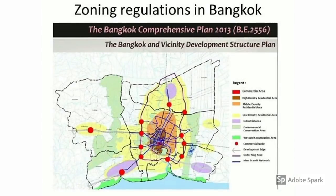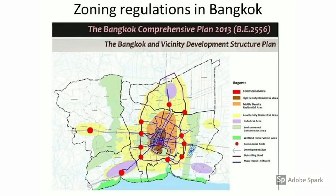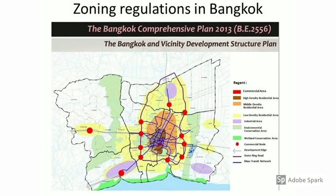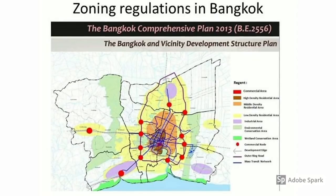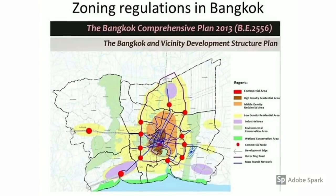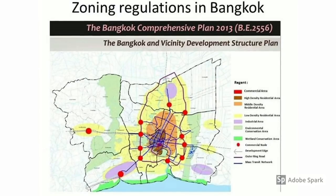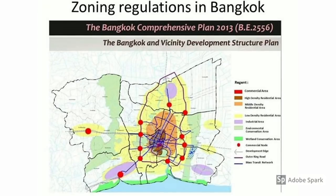Using a system similar to a choropleth map, you can see which areas of Bangkok have been designated for specific uses. The areas along the Chao Phraya River have been designated strictly for recreational use, separate from commercial and residential areas. This map is found in your textbook under 'Zoning Regulations in Bangkok' — nothing to copy from this slide.